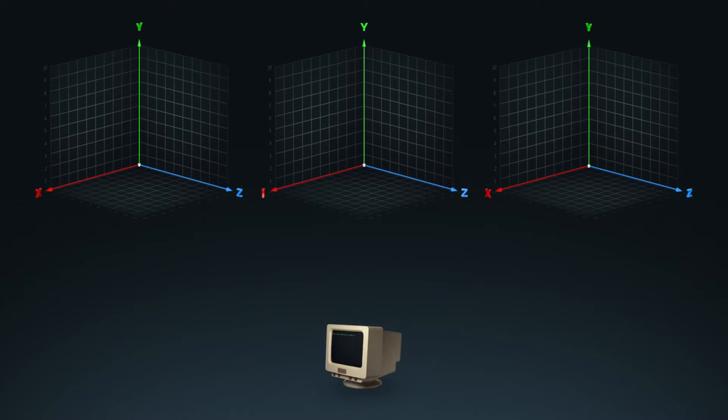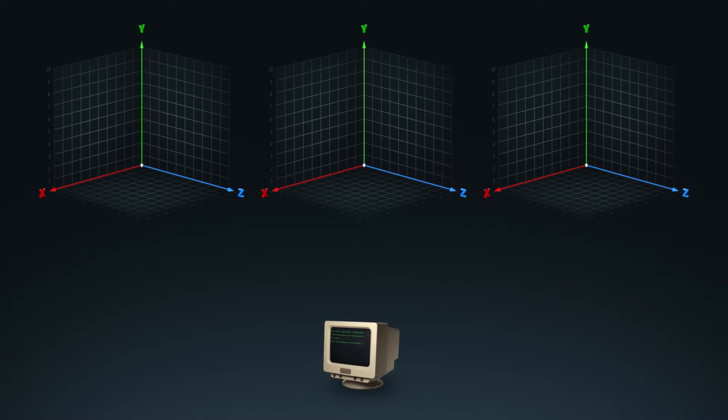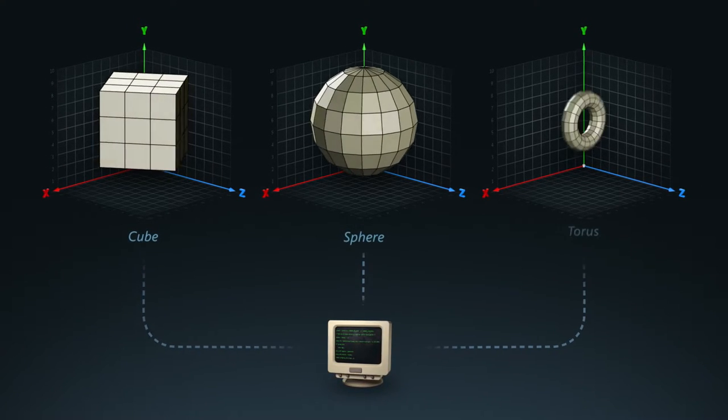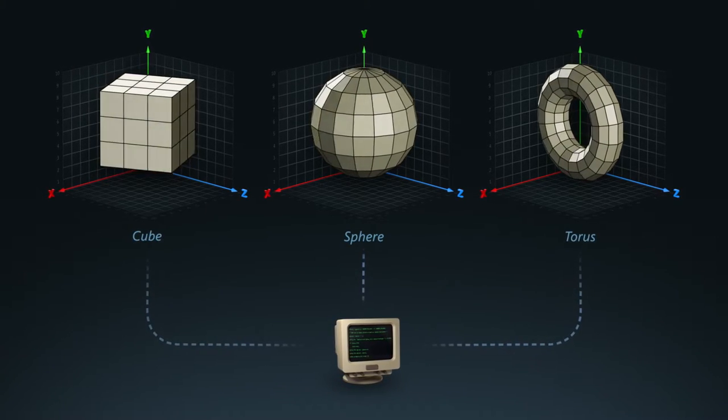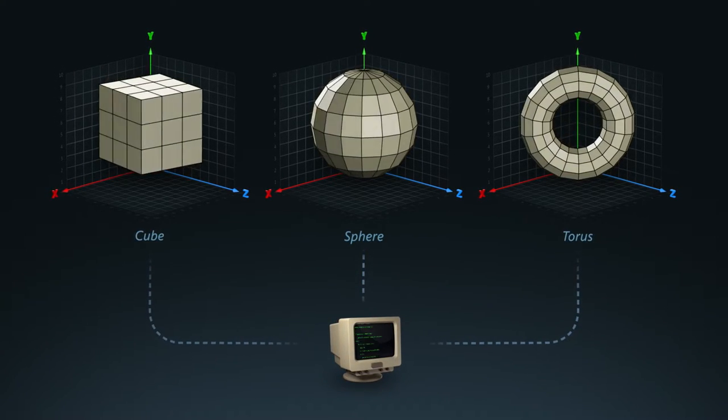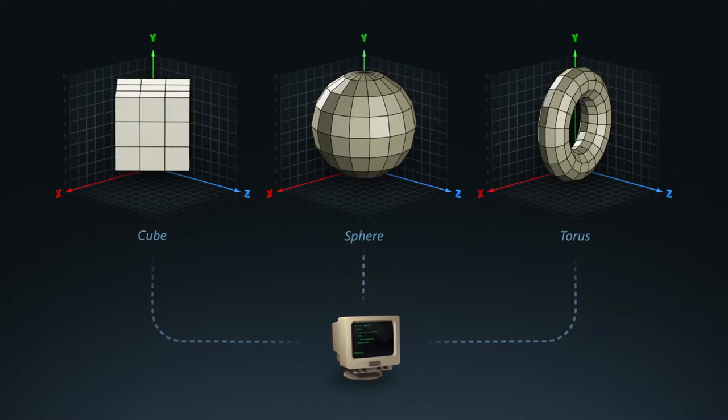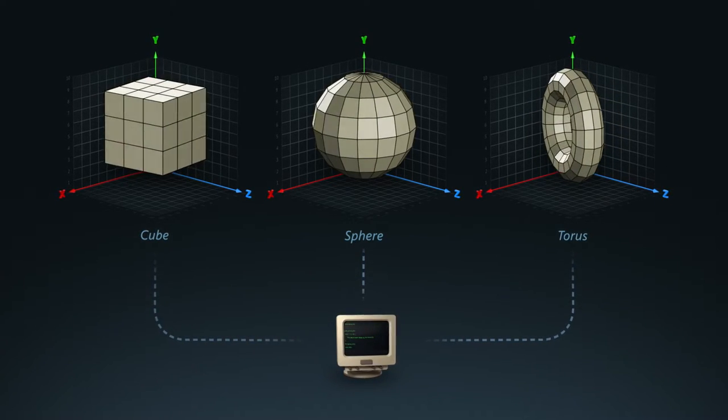All primitives are procedural, which means the computer generates them using a bunch of algorithms and a set of dynamic parameters. It's just a fancy way of saying that they're mathematically produced. They're simple, easy to use and serve as an ideal starting point for most basic objects during modeling.